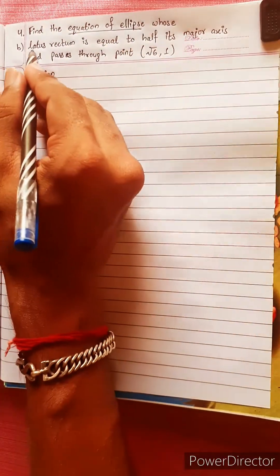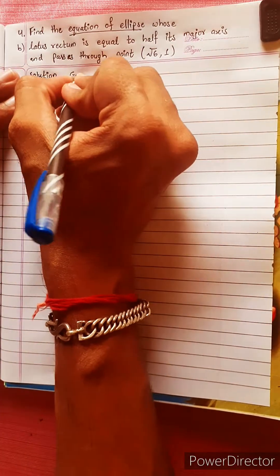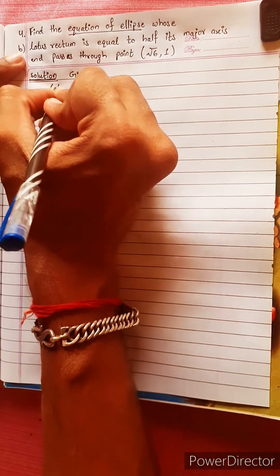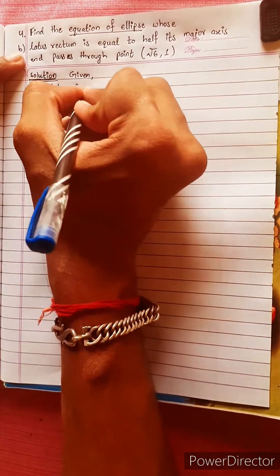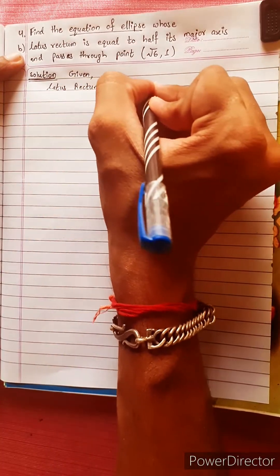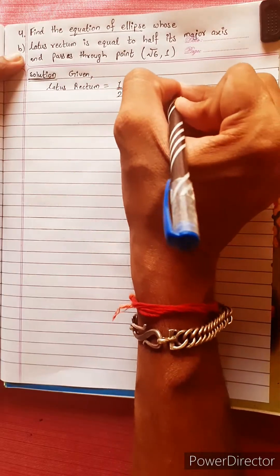In the equation of ellipse, latus rectum is given as one. Latus rectum is equal to half of the major axis.